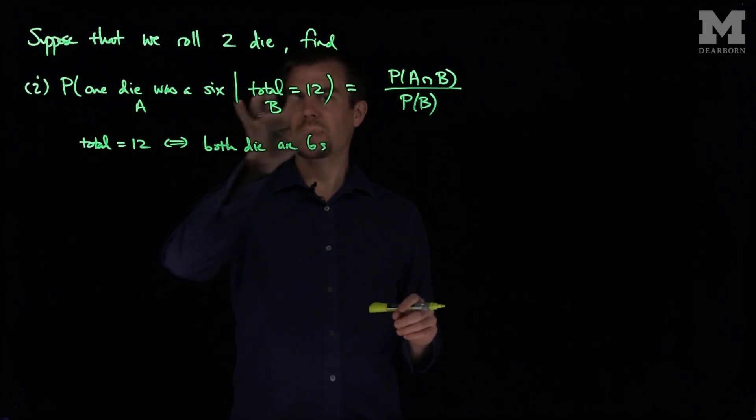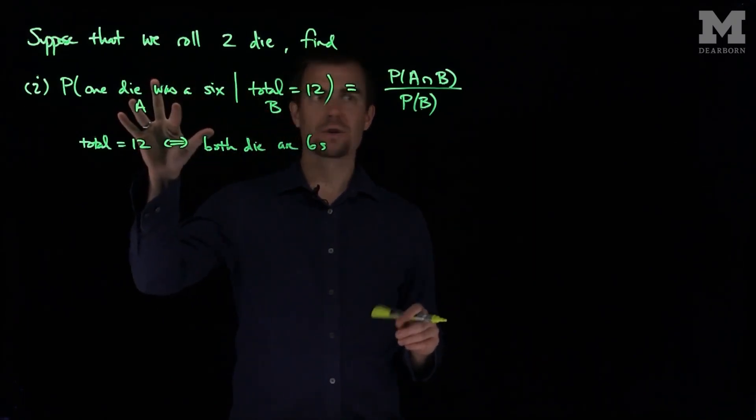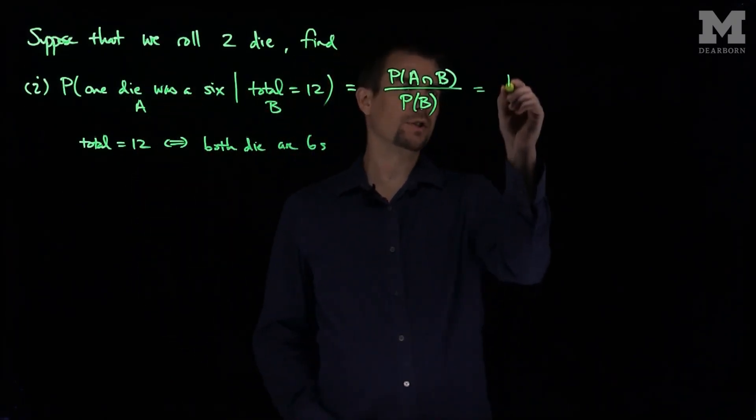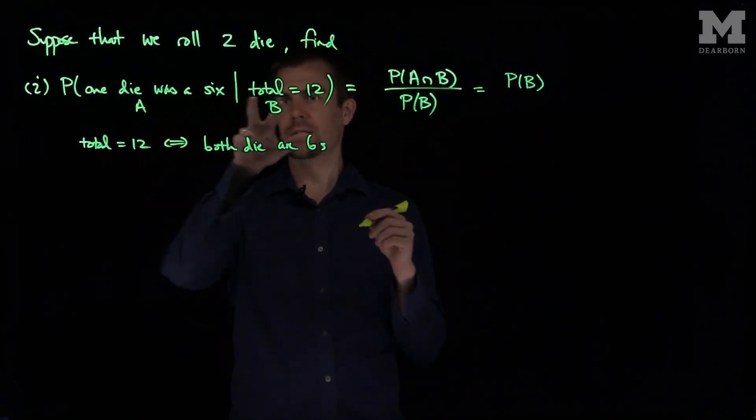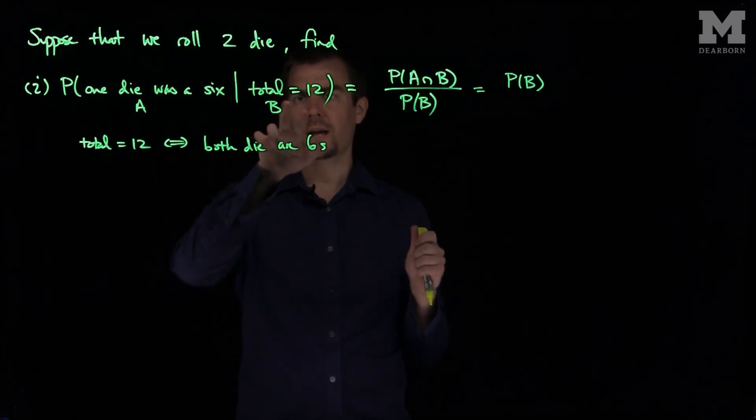So if one die was a 6 and the total is 12, this first condition is redundant. So the top condition is just going to be the probability of B happening because B is a subset of A.